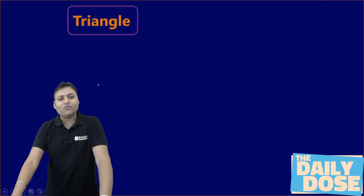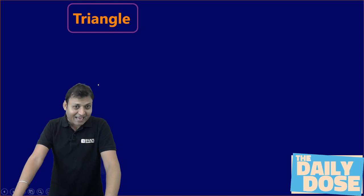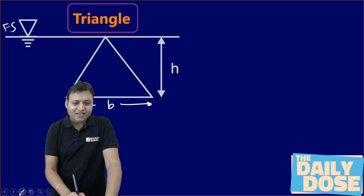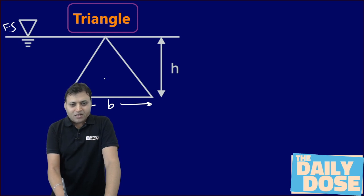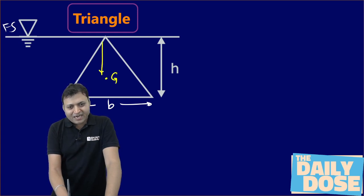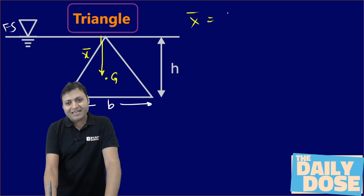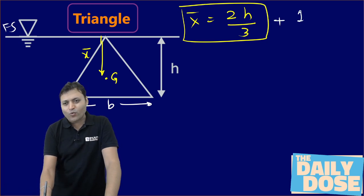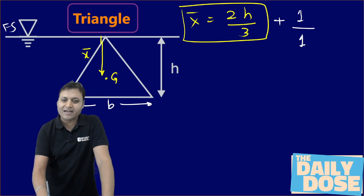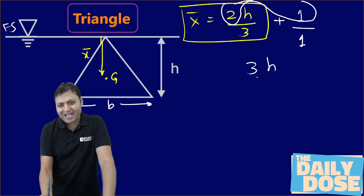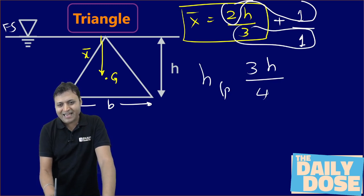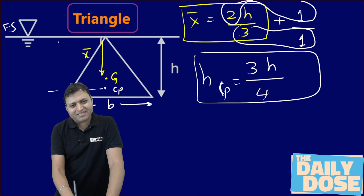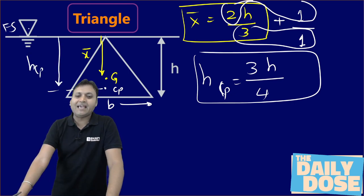Similarly, if there is another vertical plane surface in the form of a triangle, but here the vertex of the triangle is coinciding with the free surface — base is B and height is h. We find the depth of centroid from the free surface: x̄ = 2h/3. To find the depth of center of pressure, we add 1 in the numerator and 1 in the denominator: the numerator becomes 3h and the denominator becomes 4. So the depth of Cp from the free surface is 3h/4. We can check this value using the formula as well.